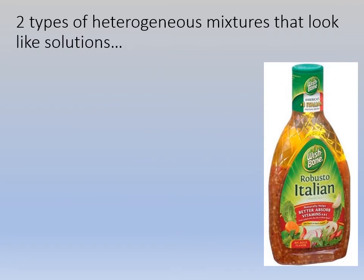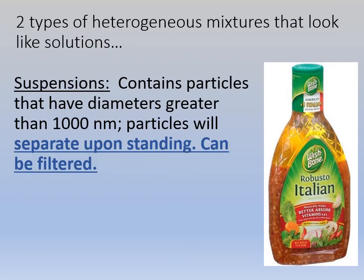We have two types of heterogeneous mixtures that a lot of people think are solutions, but they're not. One of them is called suspensions. A suspension is a heterogeneous mixture that has particles with a diameter greater than 1,000 nanometers — remember, solutions were 0.1 to 2 nanometers. So suspensions have really big pieces. The particles can separate very easily, and you can filter suspensions. Italian dressing is a heterogeneous mixture and it's a suspension — those are big particles in there; we can see them.